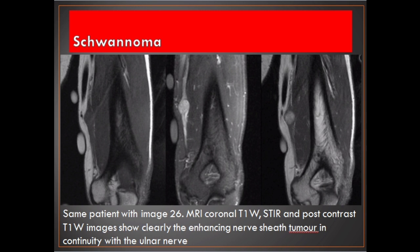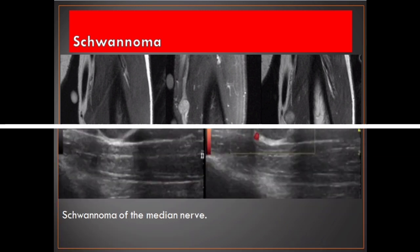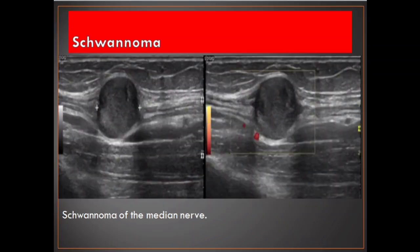Same patient as previous image. MRI coronal T1W, STIR and post-contrast T1W images show clearly the enhancing nerve sheath tumor in continuity with the ulnar nerve. Schwannoma of the median nerve.